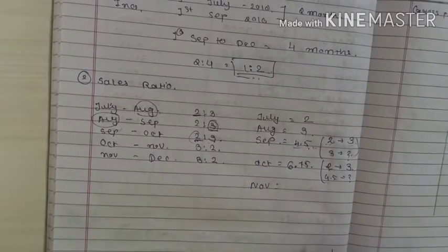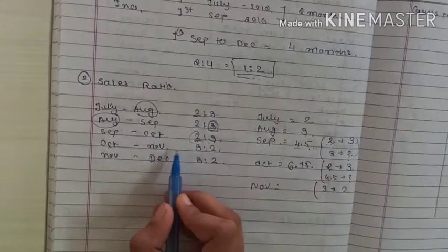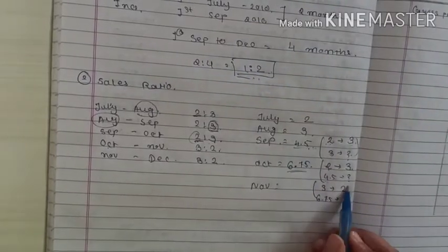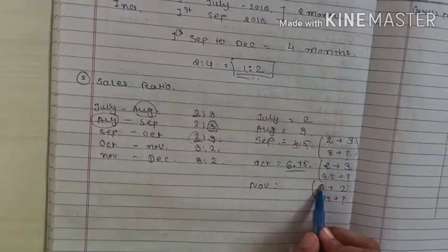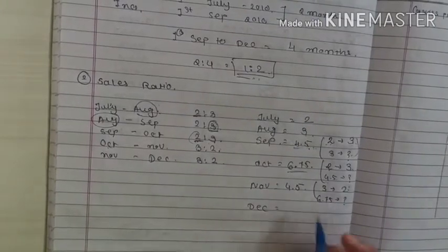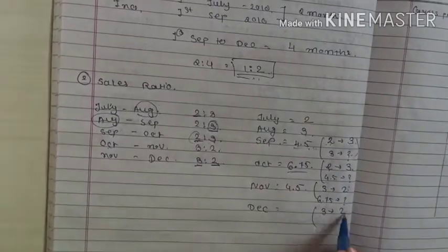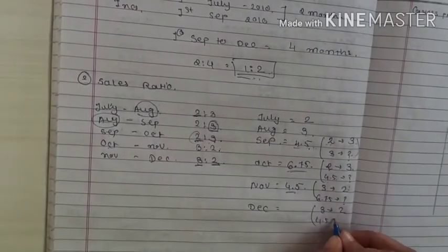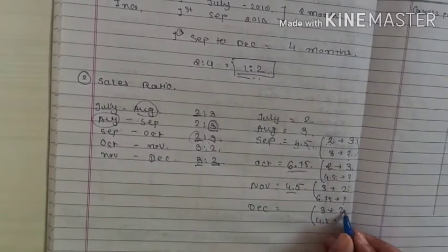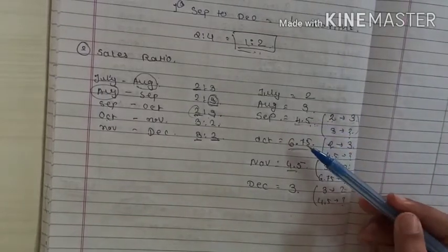So October is 6.75. For November, since October:November = 3:2 and October is 6.75, we get November = (6.75 × 2) / 3 = 4.5. For December, since November:December = 3:2 and November is 4.5, we get December = (4.5 × 2) / 3 = 3. So the monthly proportions are: July=2, August=3, September=4.5, October=6.75, November=4.5, December=3.